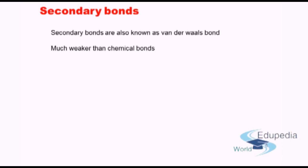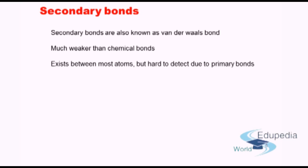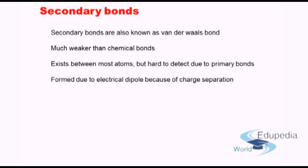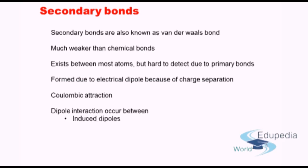This electrical attraction is whereby the bond exists — that is the nature of secondary bonds. Secondary bonds exist between almost all atoms in one form or other, but they are hard to detect because the primary bond present is much stronger. They are formed due to an electrical dipole, either because of charge separation or because of inherent polarity in the atom. The resultant force is Coulombic attraction.